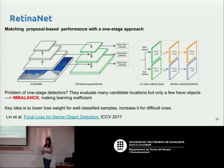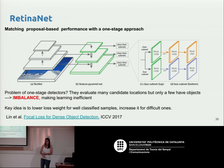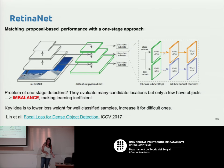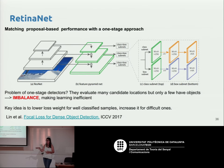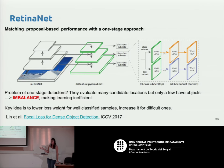Typically, proposal-based methods were the state of the art because they analyze only the best regions. RetinaNet authors observed that the problem with single-stage methods was a severe class imbalance: there are far more background positions without any object than positions with an object. This imbalance makes training difficult. RetinaNet addressed this by modifying the loss function — called focal loss — to give more importance to positions that actually contain an object and less importance to background positions. This was the first single-stage algorithm to match the performance of proposal-based methods.